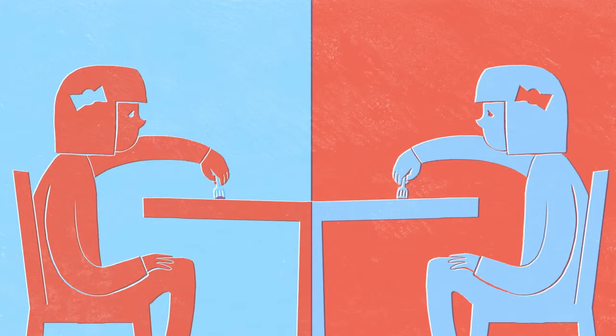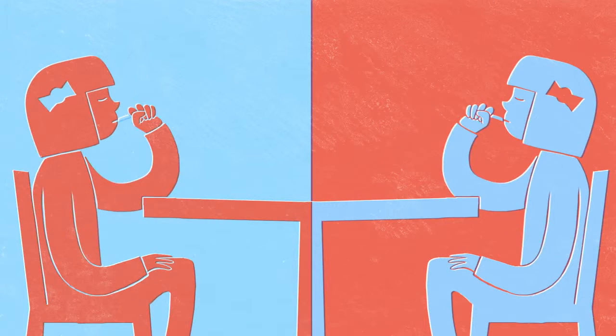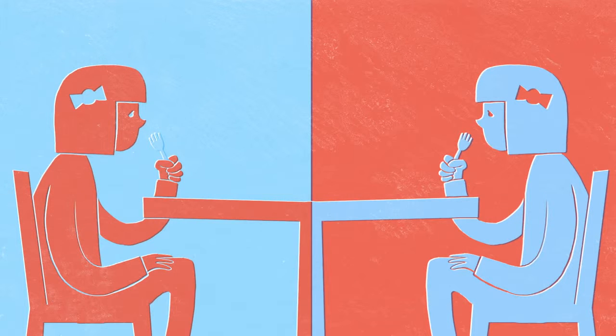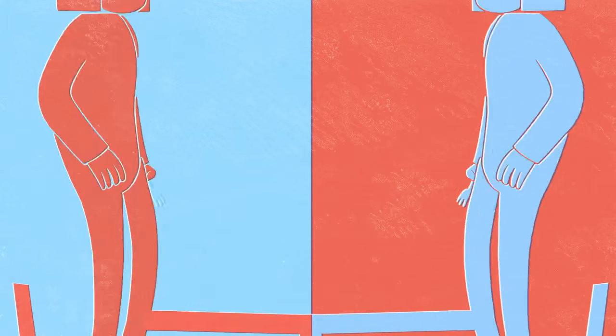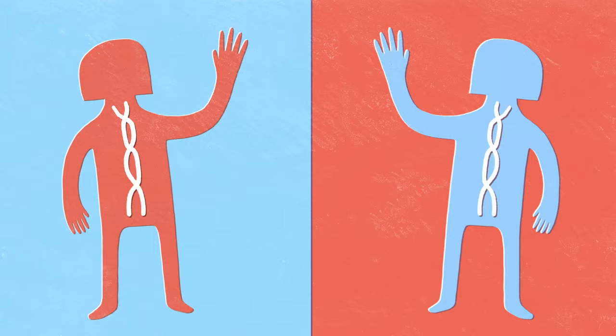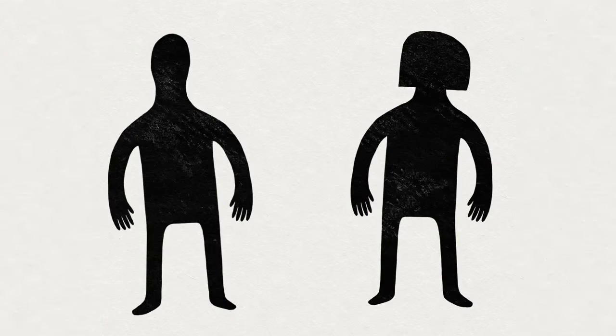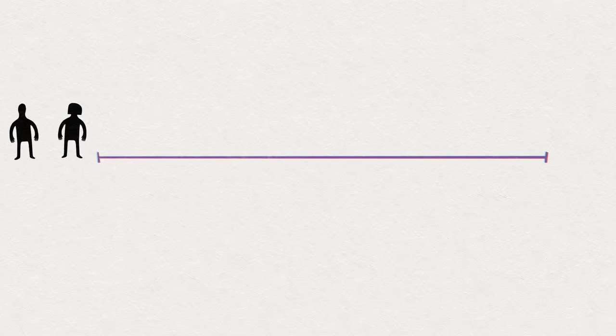Identical twins who have the same genes can have different dominant hands. In fact, this happens as often as it does with any other sibling pair. But the chances of being right or left-handed are determined by the handedness of your parents, in surprisingly consistent ratios.